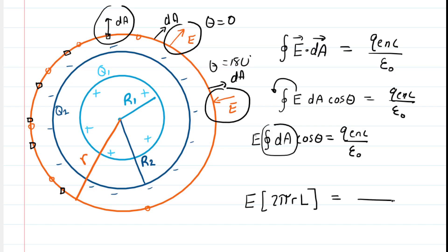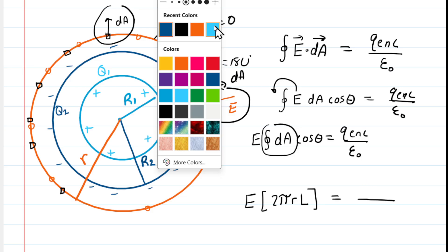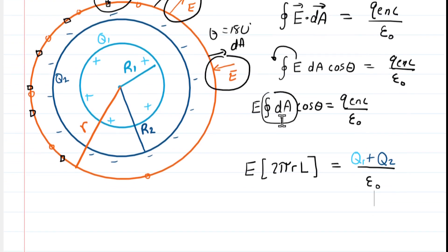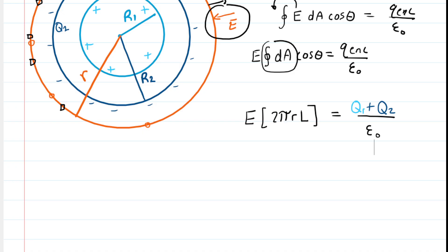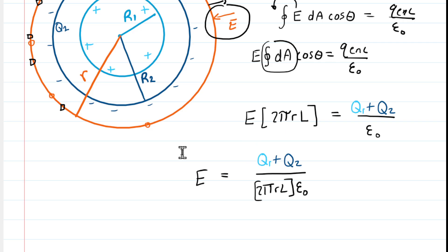The charge enclosed by that orange Gaussian surface is both Q1 and Q2, since our Gaussian surface encloses both structures. We add those charges to get the total enclosed charge, then divide both sides by 2πRL to isolate the electric field.